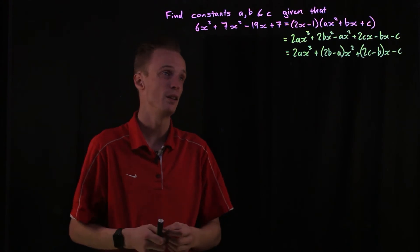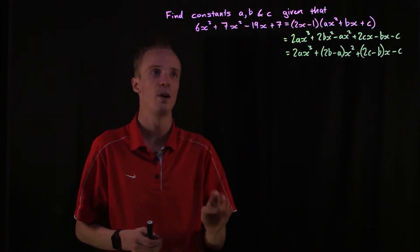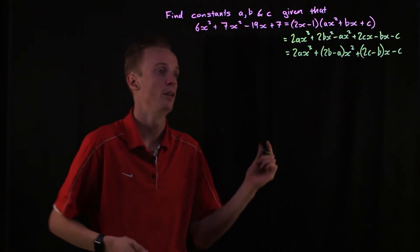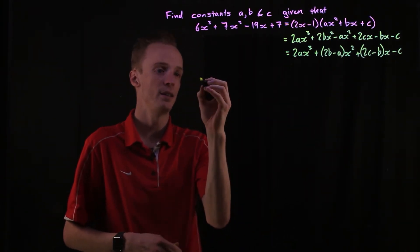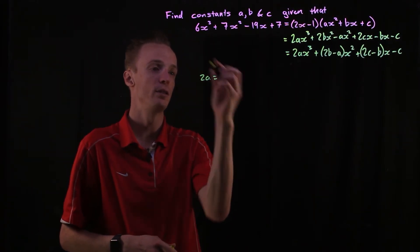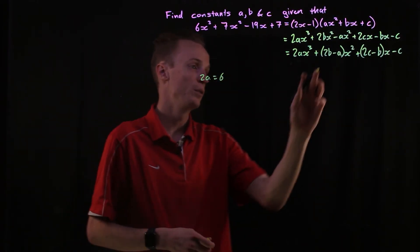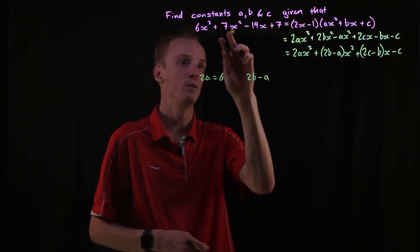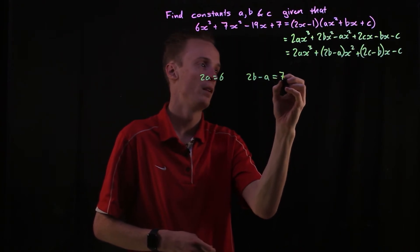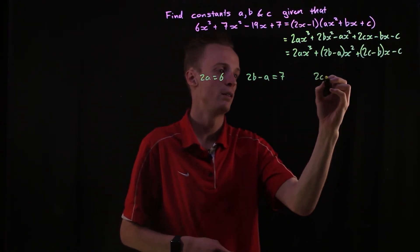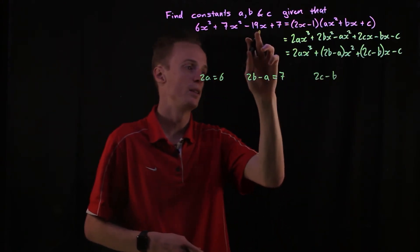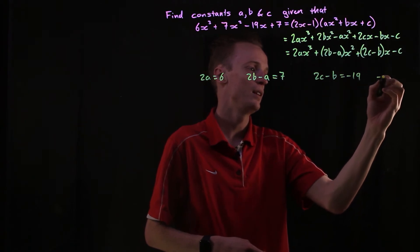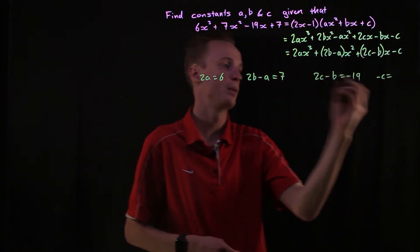So what we can essentially do here is create four different equations to help find what the a, b and c values are equal to. We can say that 2a must be equal to 6. We can also say that 2b minus a must be equal to 7. We can say 2c minus b must be equal to negative 19. And we can say that negative c must be equal to positive 7.